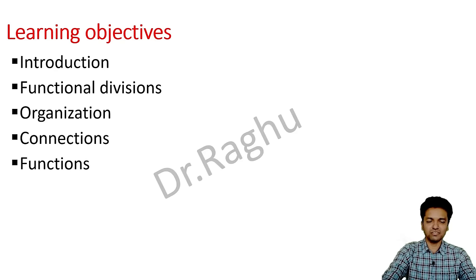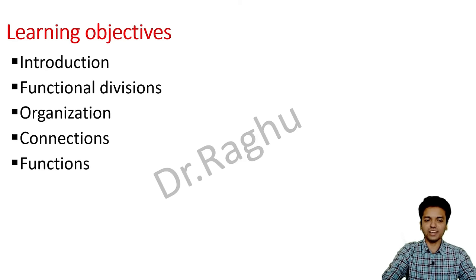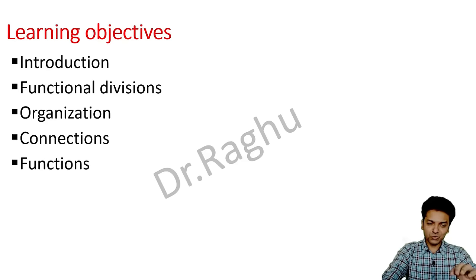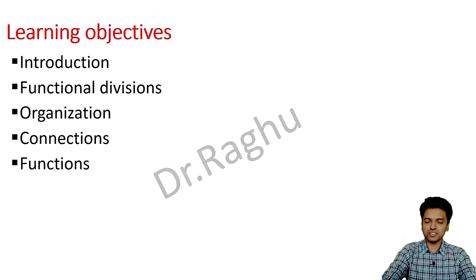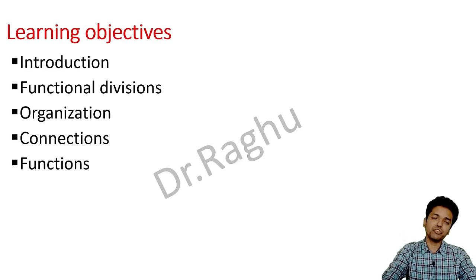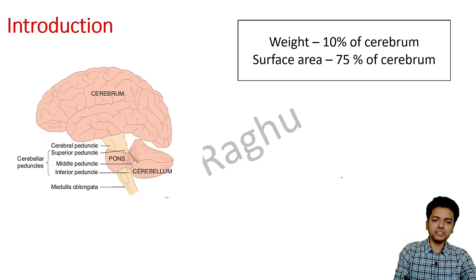Let's define the learning objectives. We'll have a brief introduction to the cerebellum, look at its functional divisions, how it is organized into an outer cortex and inner nuclear layer, and then the connections — which is the most important and confusing part. Finally, we'll cover the functions. Cerebellar lesions and clinical tests will be covered in a separate video.